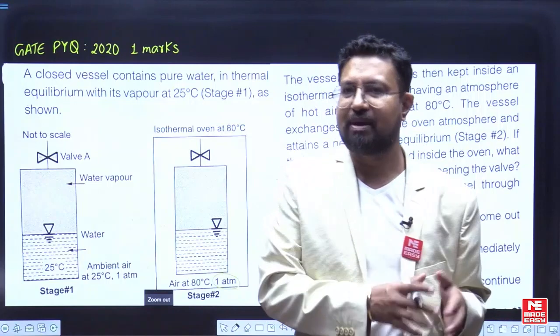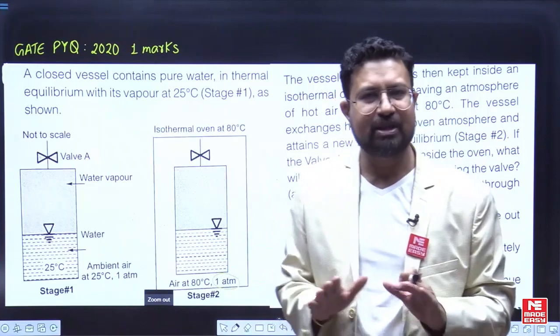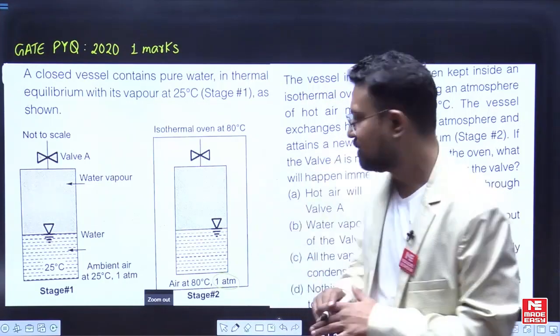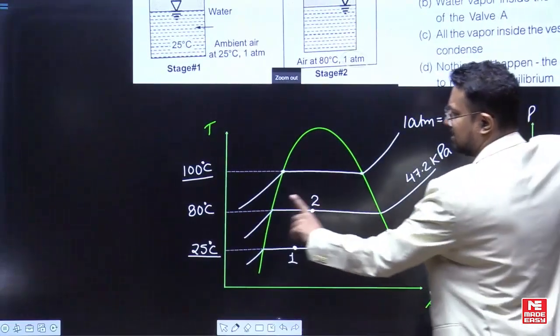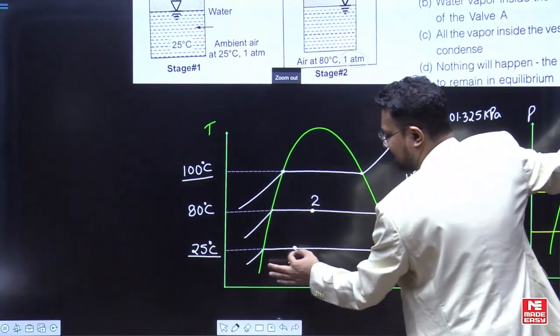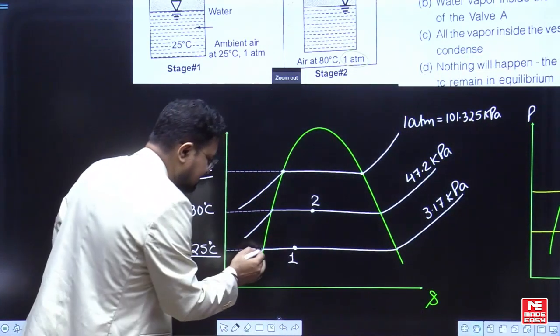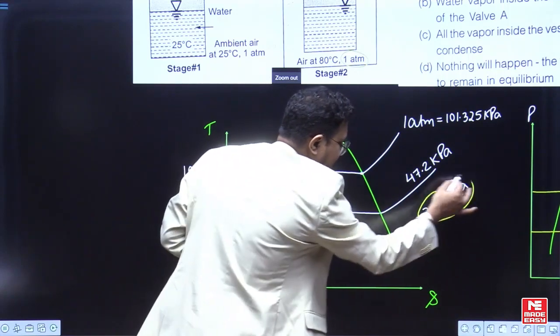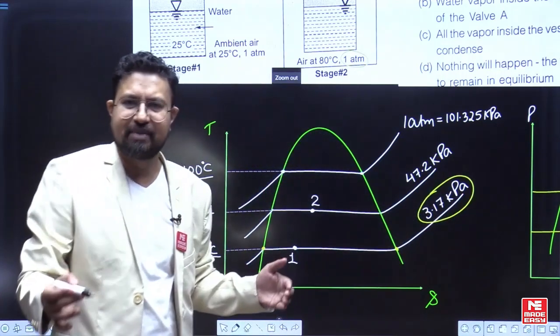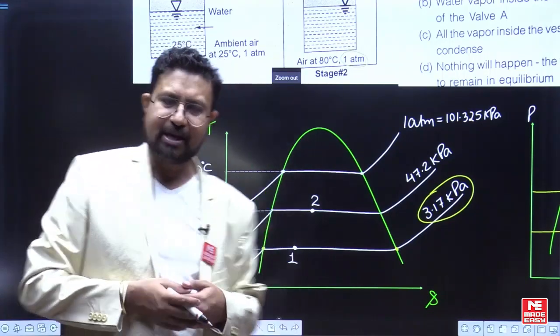Corresponding to 25 degrees Celsius, the vapor pressure is very low. I remember the values, but for solving this question you need not know the values. So let me show you here on the T-S diagram which I have drawn. Here is 25 degrees Celsius. Let us say we are at condition one where we have some saturated liquid and some saturated vapor, and the pressure is 3.17 kilopascal, which is very low compared to the atmospheric pressure of 101.325 kilopascal.